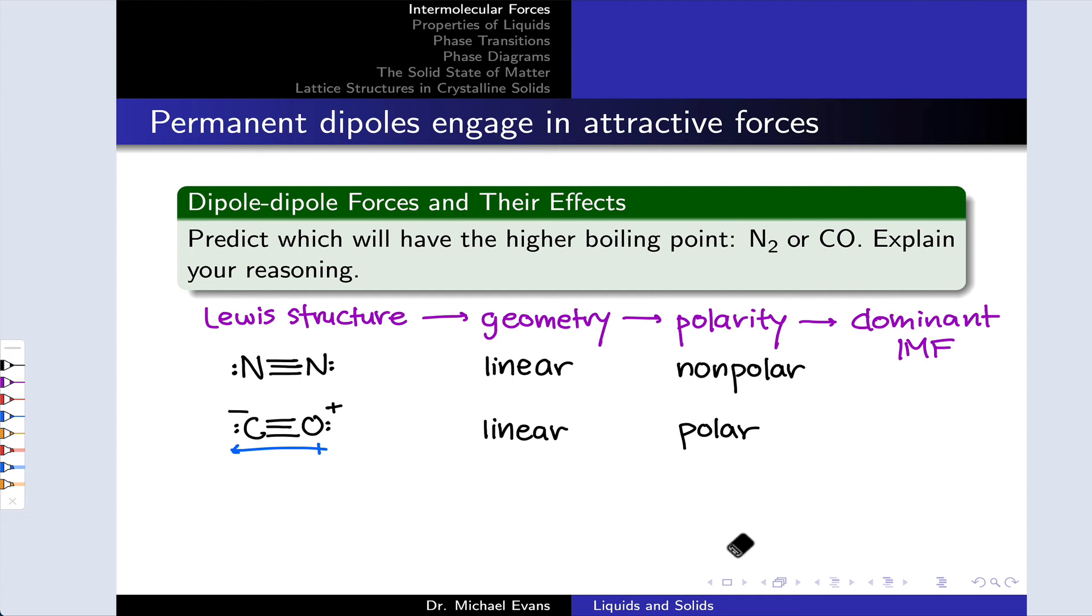So in N2, the dominant intermolecular force is London forces. This is a non-polar molecule. So without a dipole moment, it can't exhibit dipole-dipole forces. But CO can with its permanent dipole moment. So the dominant IMF in carbon monoxide is dipole-dipole forces.